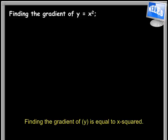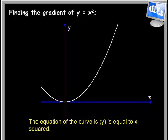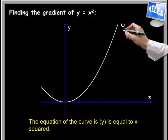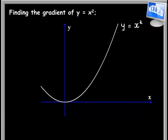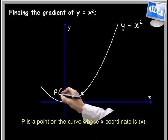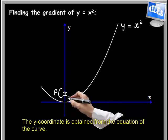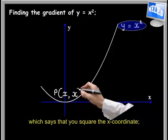Finding the gradient of y equals x squared. Consider the graph shown here. The equation of the curve is y equals x squared. P is the point on the curve whose x-coordinate is x. The y-coordinate is obtained from the equation of the curve, which says that you square the x-coordinate, so that's x squared.